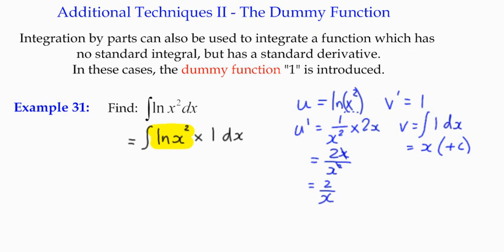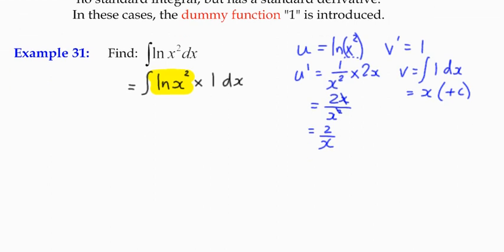So we've integrated v dash to give us the function v, we've differentiated u to give us the function u dash. So we can use our traditional method for integration by parts. We're going to replace the original integral with uv minus the integral of u dash v with respect to x.